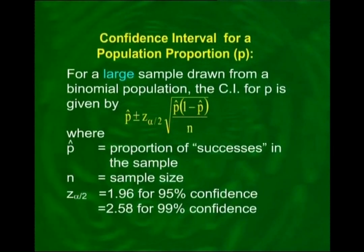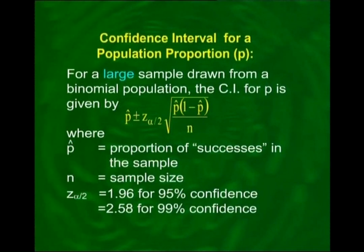Let us begin with the confidence interval for p, the proportion of successes in a binomial population. For a large sample drawn from a binomial population, the confidence interval for p is given by p-hat plus minus z-alpha by 2 into the square root of p-hat into 1 minus p-hat over n. Here, z-alpha by 2 equals 1.96 for 95% confidence, 2.58 for 99% confidence, and 1.645 for 90% confidence.